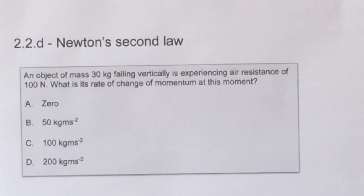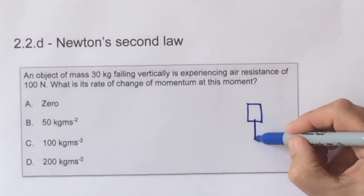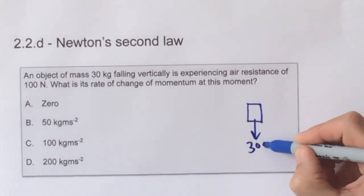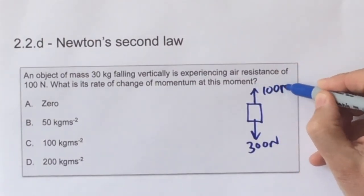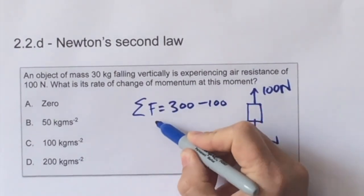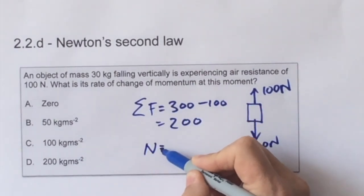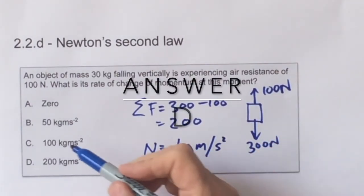The question asks about rate of change of momentum, and from Newton's second law, we know that is the same as the force, and we must be interested in the resultant force here. So downwards, the weight is approximately 300, because we take G to be 10. The upward force is 100 Newtons, and therefore the total force on the object is 200 Newtons, and a Newton is the same as kilogram meters per second squared in the SI units, and therefore the answer is D.